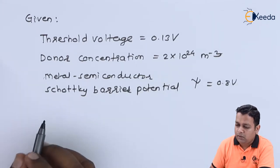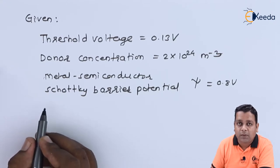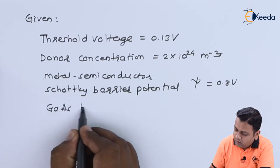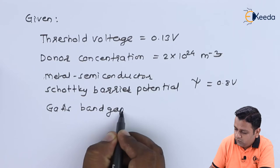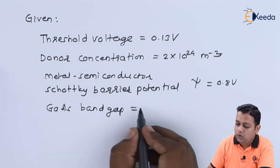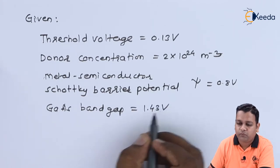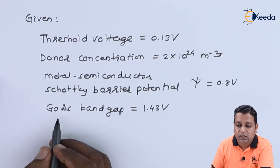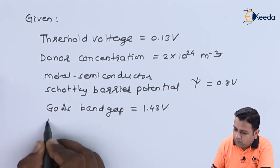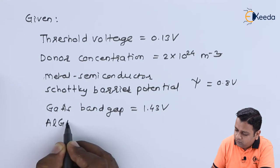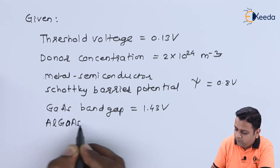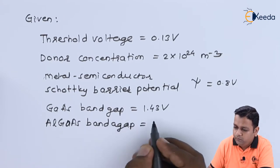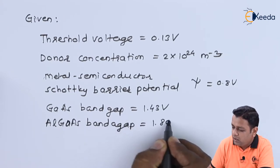The next parameter, capital E suffix GG, is the gallium arsenide band gap with value 1.43 volts. E suffix GA is the band gap for aluminium gallium arsenide with value 1.80 volts.